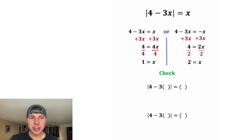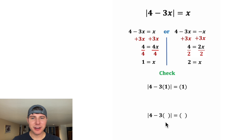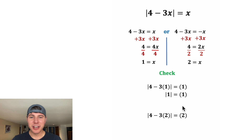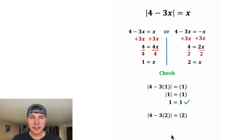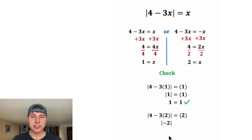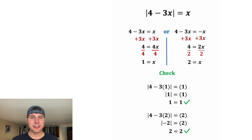Now we just have to check our answers. For the first one, let's plug in 1. Inside this absolute value, we have 4 minus 3, which is equal to 1. The absolute value of 1 is 1, so that checks out. For the second one, let's plug in 2. Inside this absolute value, we have 4 minus 6, which is negative 2. The absolute value of negative 2 is 2, so that checks out.